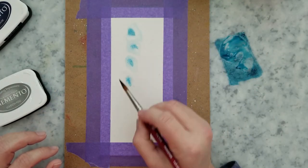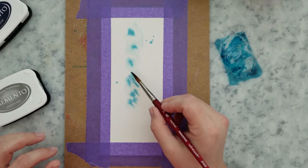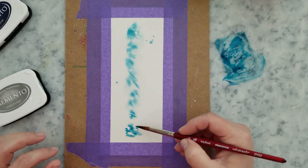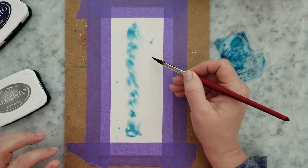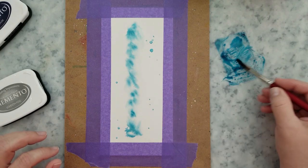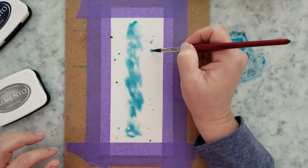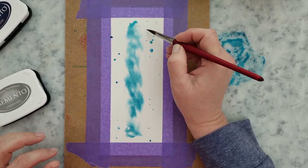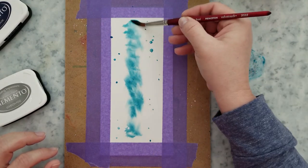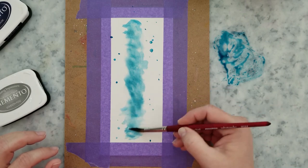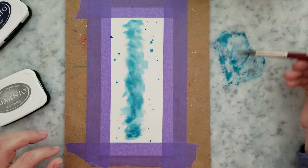And what I did was I just came down the center of this panel with clean water. And now I've laid some of that Teal Zeal ink down on my silicone mat. I'm going to work straight from my mat onto the watercolor paper. And there's no rhyme or reason to this technique. It's just get messy with it, lay the ink down and just get messy with it.